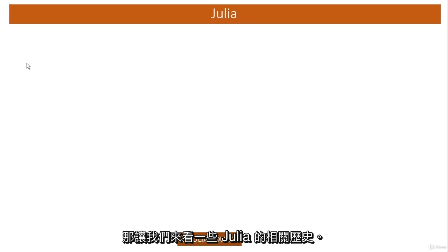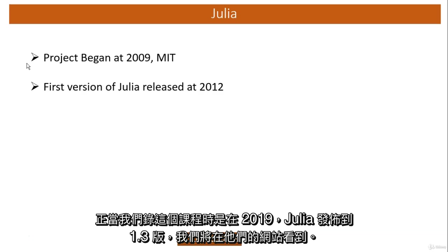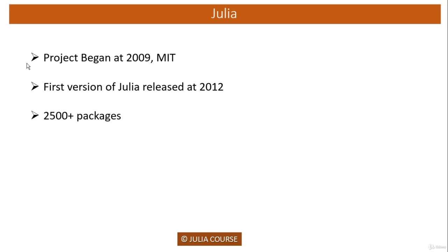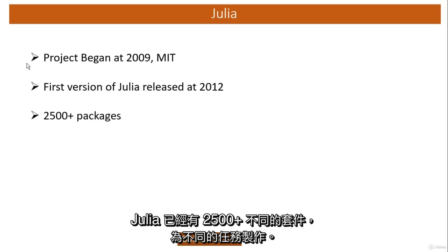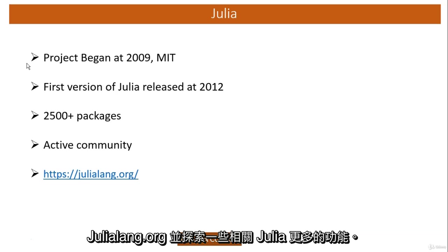Let's see some of the history related to Julia. The Julia project began at MIT in 2009 and its first version was released in 2012. As of recording this video in 2019, Julia version 1.3 got released. Julia already has 2500 plus different packages for doing different tasks. It has an active community.